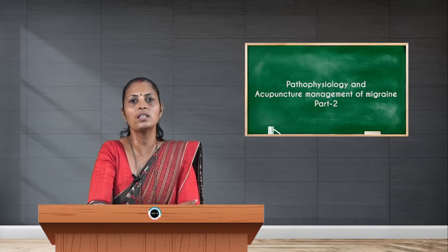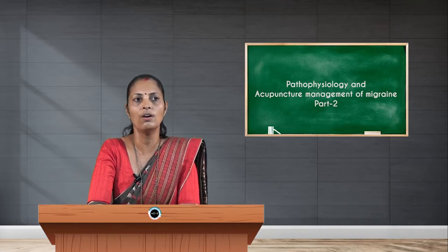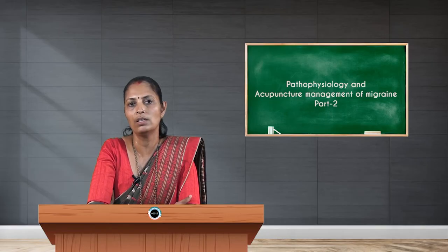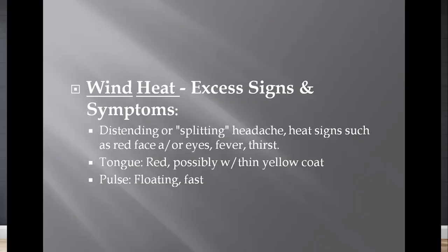The next external causative factor is wind heat. The main symptom is a splitting kind of headache associated with heat signs such as red face or eyes, sometimes accompanied by fever and thirst. When we look at the tongue, it may appear red, possibly with a white or thin yellow coat. The pulse may be floating and fast.